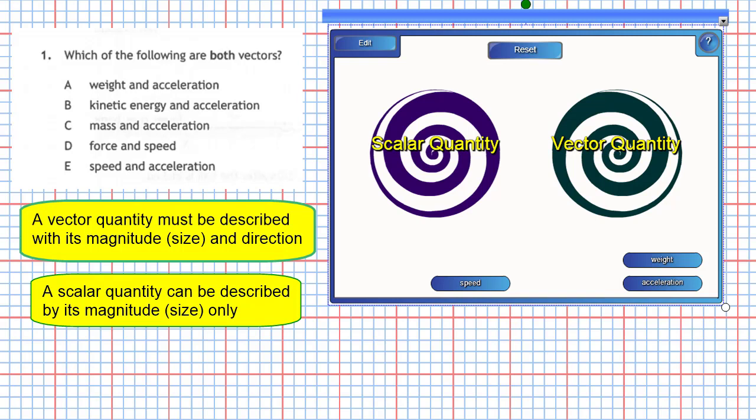Weight is a member of the forces family, so weight should be a vector quantity as well. It needs a size and a direction. Correct.